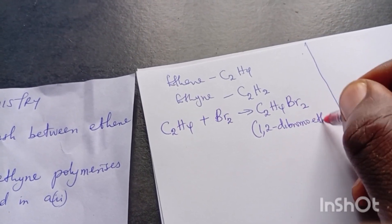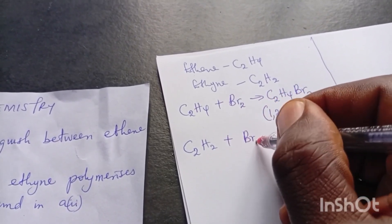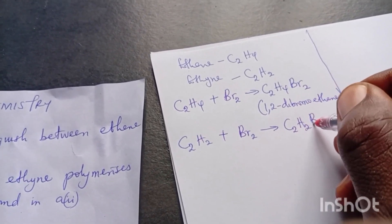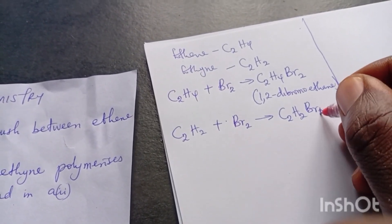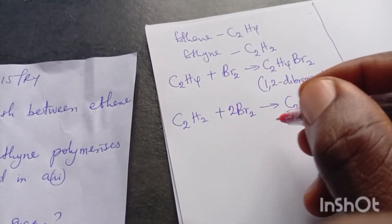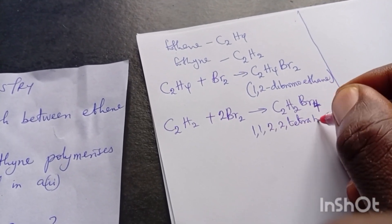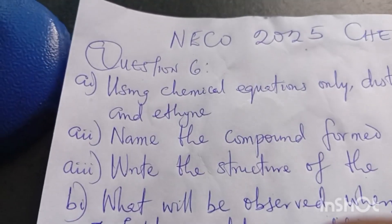For ethyne: C₂H₂ + Br₂ → C₂H₂Br₄. We need to balance it, so we get Br₄, giving us 1,1,2,2-tetrabromoethane. With that, I have answered Question 6(a)(i). You can also use ammoniacal silver nitrate (Tollens' reagent), but I am using bromine here.